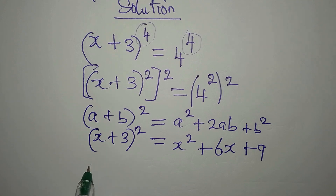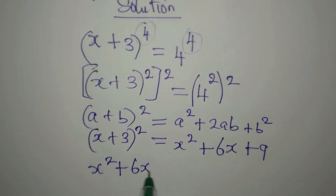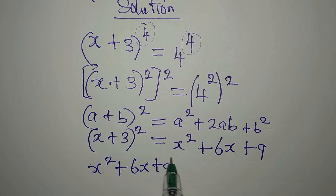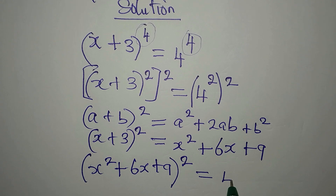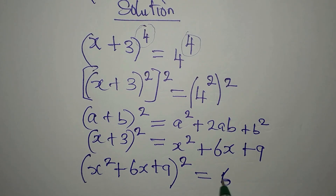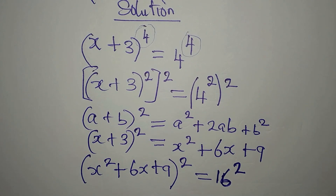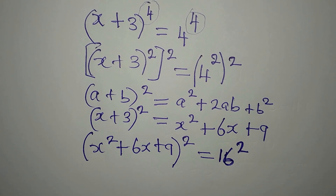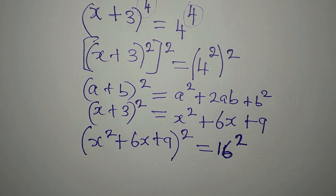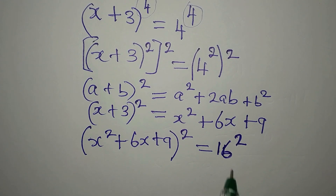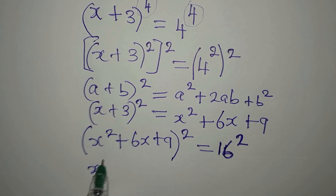So we now have (x² + 6x + 9) to the power of 2. On the other side, 4² is 16, so we write 16 and then square the 16 again. Remember, I want to use the difference of two squares, so we are going to bring this to the left so we can have difference of two squares.